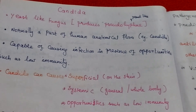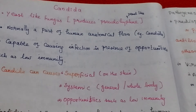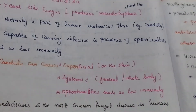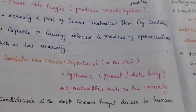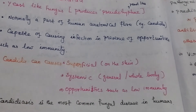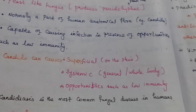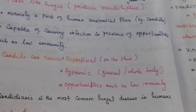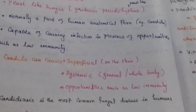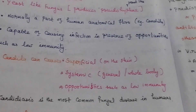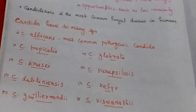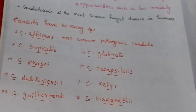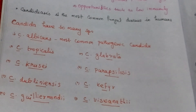In summary: Candida is a yeast-like fungus and a normal part of the human body — normal flora. It causes infection when it has an opportunity. Candida causes three different types of disease: superficial, systemic, and opportunistic. Superficial means on the skin, systemic means whole body, and opportunistic occurs during low immunity. It has many species; Candida albicans and tropicalis are the more pathogenic ones.